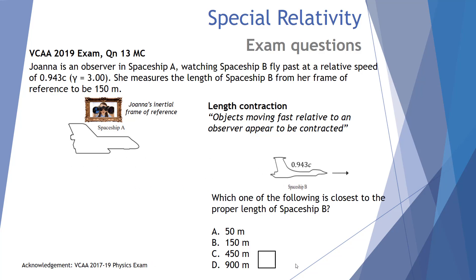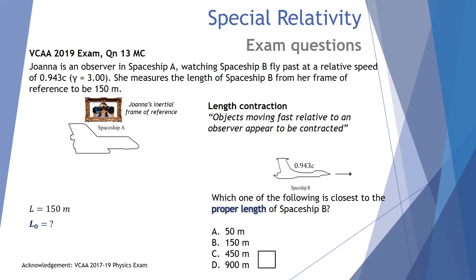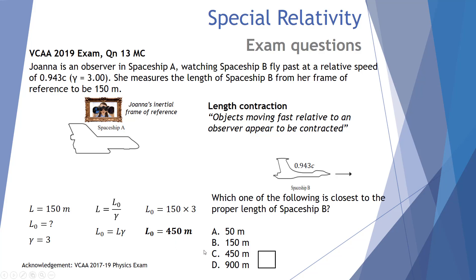So Spaceship B contracts as it moves past. The question is which one of the following is closest to the proper length of Spaceship B? It's important to note she measures the length of Spaceship B from her frame of reference to be 150 meters — that is a contracted length of 150 meters. She's trying to work out what the proper length is, which would be the length measured on Spaceship B. With a Lorentz factor of three, the contracted length equals the proper length divided by gamma. Rearranging: proper length equals contracted length multiplied by gamma — 150 meters times 3 — giving a proper length of 450 meters. That is option C.